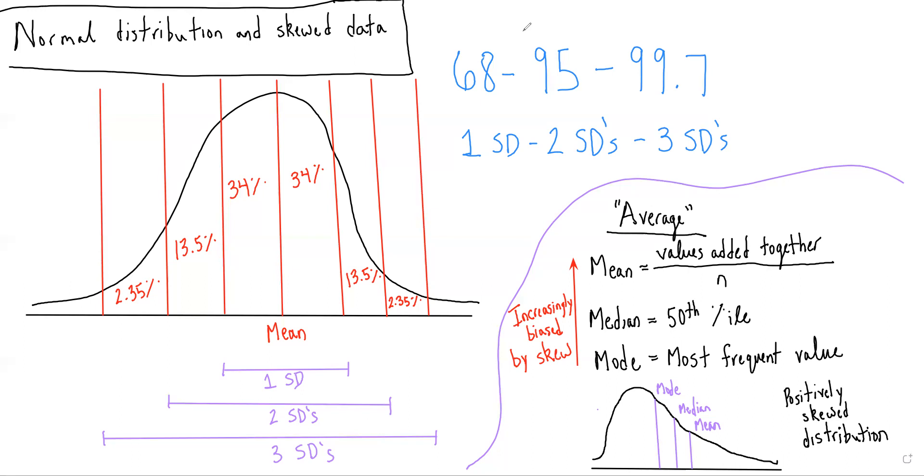what you need to know to get those questions correct is the 68, 95, 99.7% rule, which means that 68% of your data are going to fall within one standard deviation of the mean, 95% within two standard deviations of the mean, and 99.7% within three standard deviations of the mean.